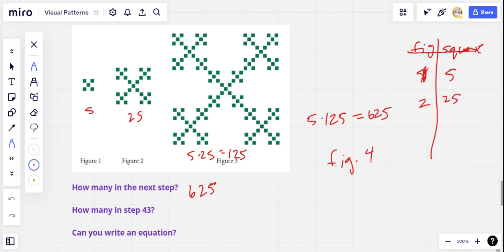In figure two, we've got twenty-five. In figure three, one hundred and twenty-five. And we're predicting in figure four, six hundred and twenty-five.